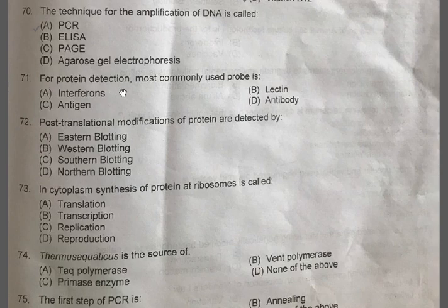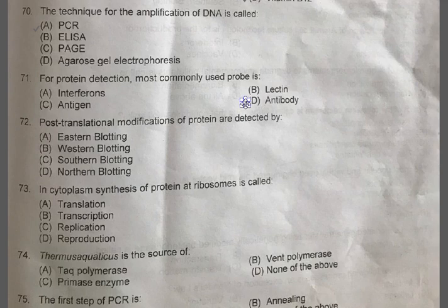Question 71: For protein detection, the most commonly used probe is — A: Interferon, B: Lectin, C: Antigen, D: Antibody. The correct one is D, Antibody. Labeled antibody molecules are used as probes.